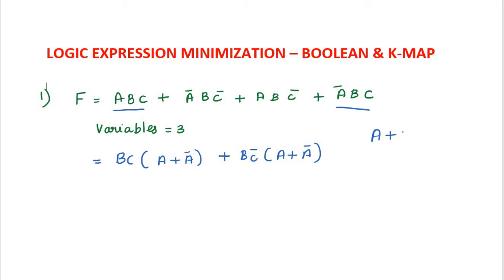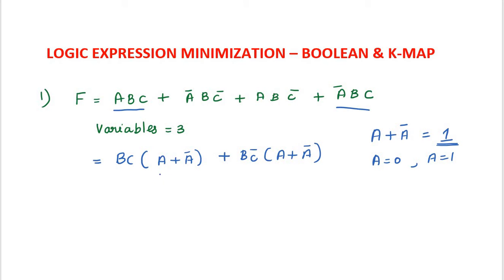What is A + A'? This is a Boolean law: A + A' is equal to 1. If we substitute A = 0 or A = 1, for both cases we get A + A' = 1. Put A = 0: 0 + 0' = 1. Put A = 1: 1 + 1' = 1. So A + A' = 1.